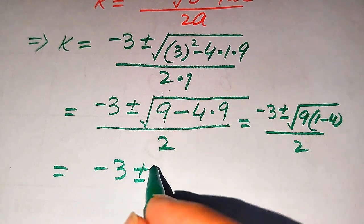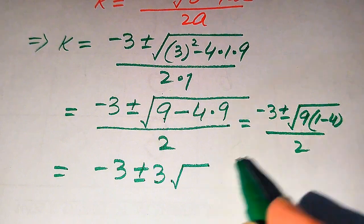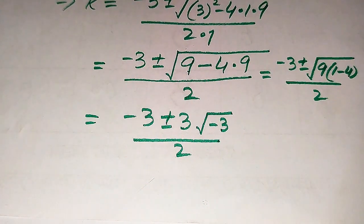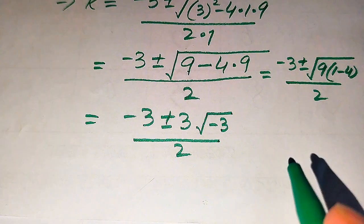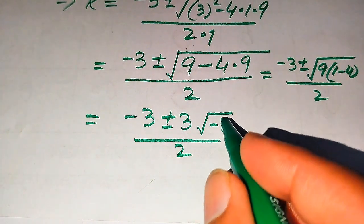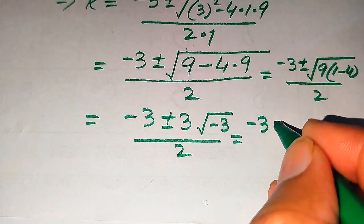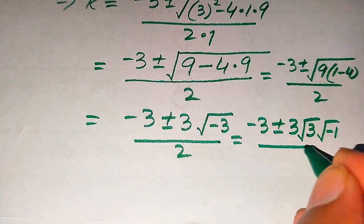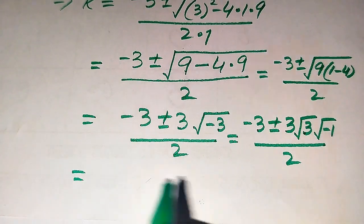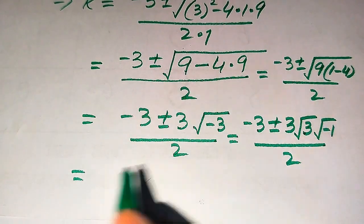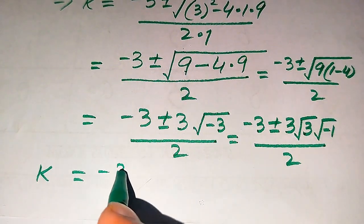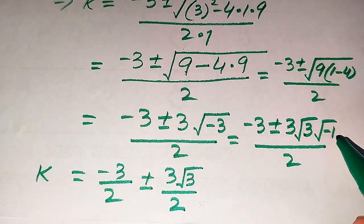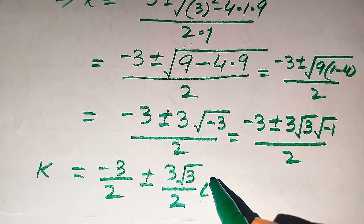The square root of 9 becomes 3, and 1 minus 4 becomes minus 3. Since a negative value appears inside the square root, we use iota, where the square root of minus 1 equals i. Separating the square root, we get k equals minus 3 divided by 2 plus or minus 3 times the square root of 3 times i, divided by 2.